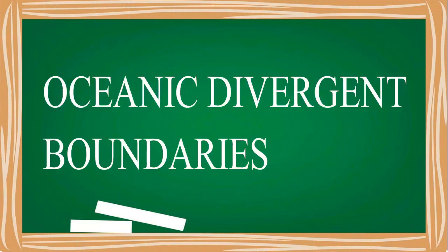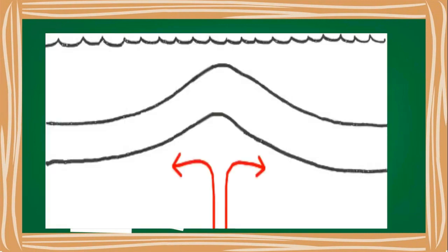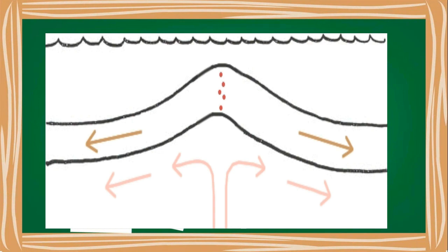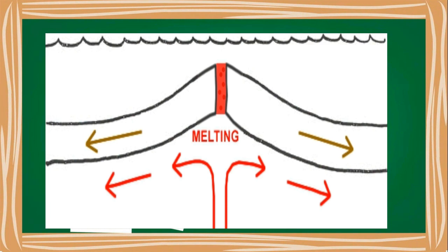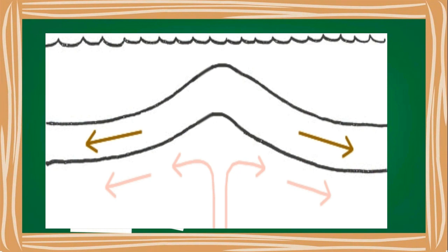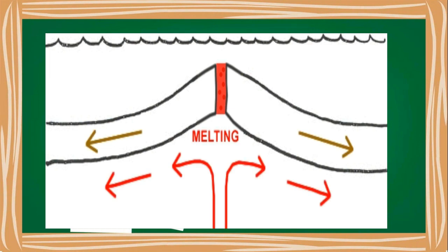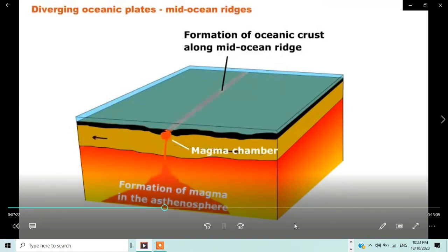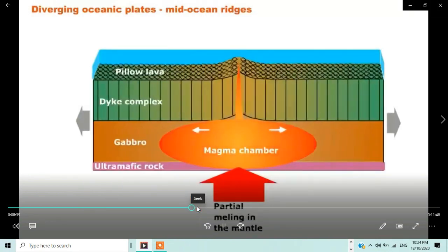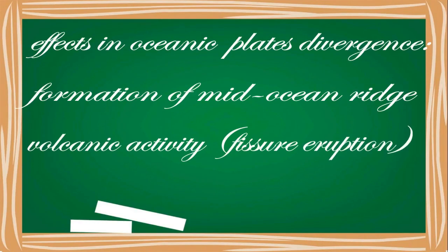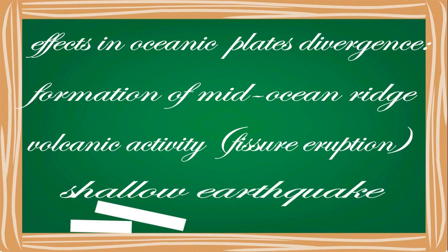When a divergent boundary occurs beneath oceanic lithosphere, the rising convection current below lifts the lithosphere, producing a mid-ocean ridge. Extensional forces stretch the lithosphere and produce a deep fissure. When the fissure opens, pressure is reduced on the superheated mantle material below; it responds by melting, and the new magma flows into the fissure. The magma then solidifies and the process repeats itself. The ridge is a high area compared to the surrounding seafloor because of the lift from the convection current. Effects found at an oceanic divergent boundary include a submarine mountain range such as the Mid-Atlantic Ridge, and volcanic activity in the form of fissure eruptions.